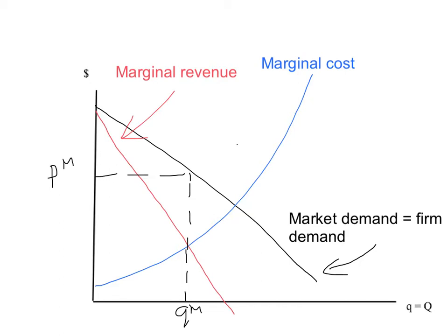Next, we want to compare this monopoly output with the output that maximises social welfare. We have our marginal cost on here, which is our marginal social cost, because there are no externalities in the simple model we have here. We just have to remember that our market demand curve, when there are no externalities, is the same as our social marginal value.